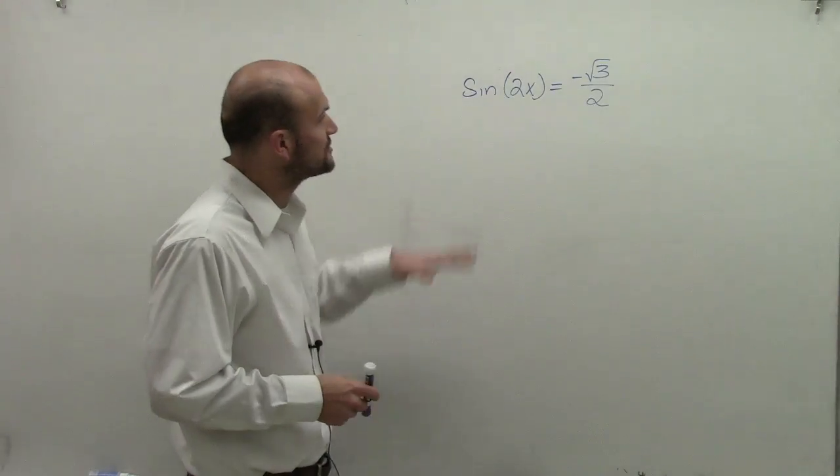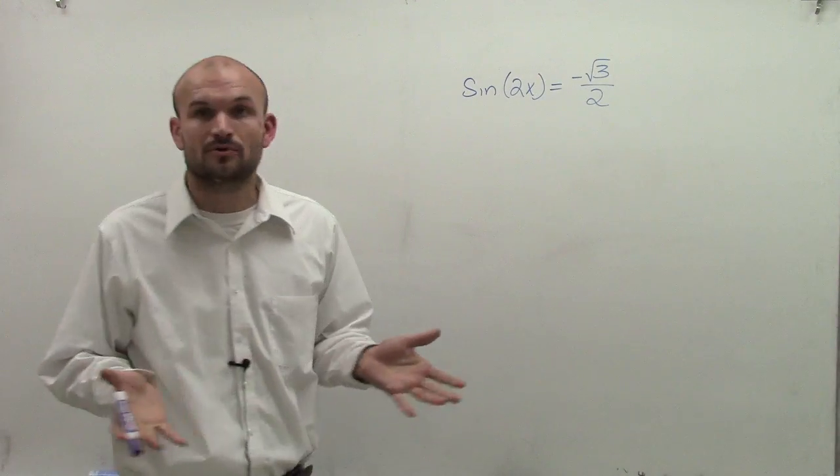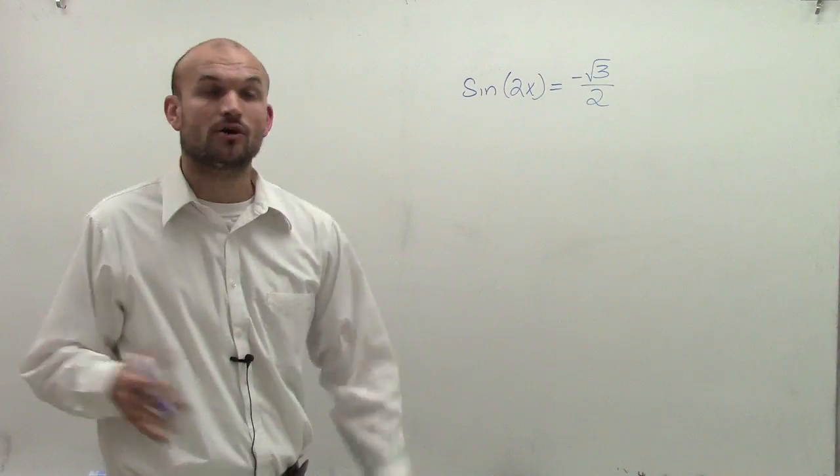So here we go. What I'd like to do is show you how to solve for the sine of 2x equals the negative square root of 3 divided by 2. We want to find all the solutions.